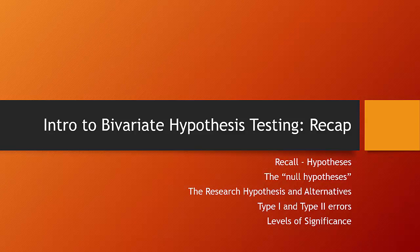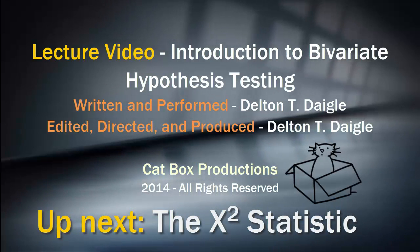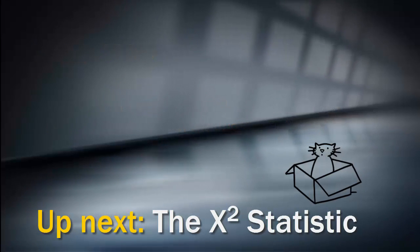To recap, we reviewed what hypotheses are. We talked about the null hypothesis and the research hypothesis, and how we might observe alternatives to the research hypothesis that are statistically significant. We also talked about type 1 and type 2 errors and how we interpret type 1 errors relative to level of significance. The next thing we're going to do is take this idea of hypothesis testing into our first statistic to test hypotheses: the chi-square statistic. We'll see you soon.